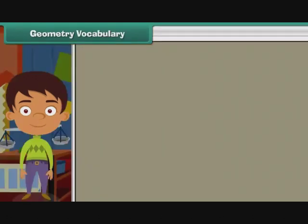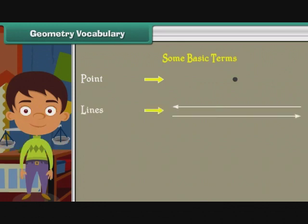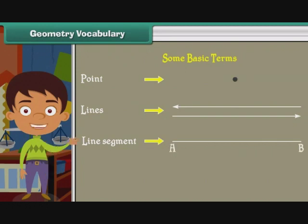Let us know about some basic terms used in geometry. Point: it is an imaginary dot. Lines: all these are straight lines. Line segment: part of a line is called a line segment. Here AB is a line segment. These are curved lines.